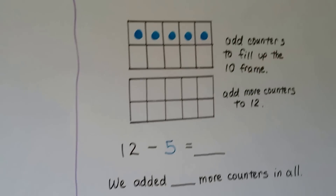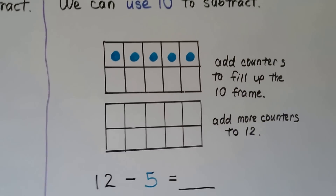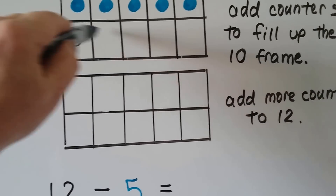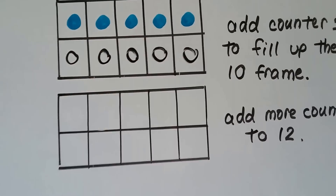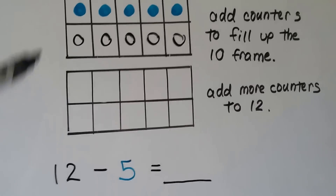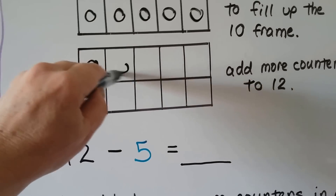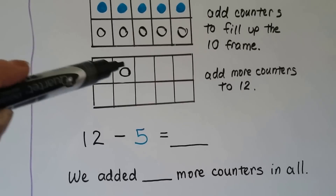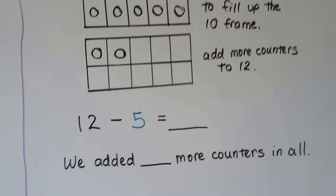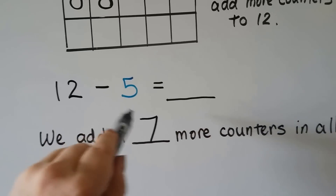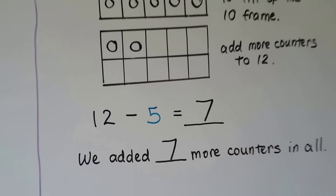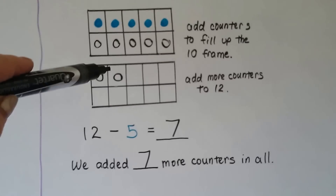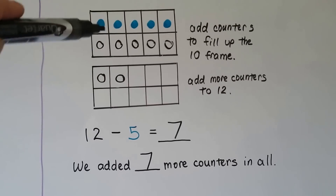As we've learned in this video, we can use 10 to subtract. 12 minus 5 — we add counters to fill up the 10 frame, then add more to get to 12: ten, eleven, twelve. We added seven counters in all — 1 through 7 — so 12 minus 5 is equal to 7. We have 12 in all: if we took the 7 away, we'd have 5; and if we took the 5 away, we'd have 7.